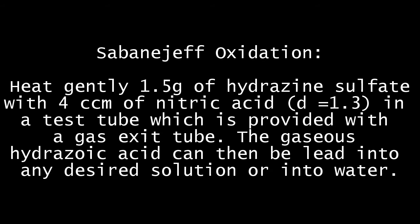Okay, that's enough history now. Let's take a look at our preparation of hydrozoic acid. This method is similar to those of Kirschius. It is known as sub-anageth oxidation. It comprises reacting hydrazine, in the form of hydrazine sulfate with nitric acid. This yields hydrozoic acid, amongst other products like nitrogen gas and nitrous oxide.